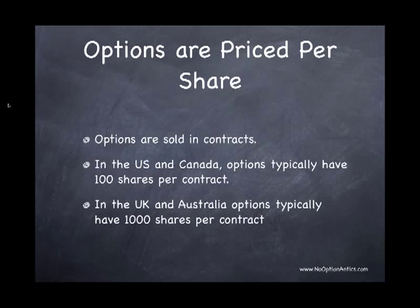So whenever you look at a price of any option, that's the price per share. But options are not sold by shares — they're sold in contracts. If you're working in the U.S. or Canadian markets, options typically have 100 shares per contract. So if an option costs $2, one contract would equate to $200. If you're trading in other markets, be careful because different countries have different amounts of shares per contract. As you can see here, in the U.K. and Australia, you have 1,000 shares per contract.